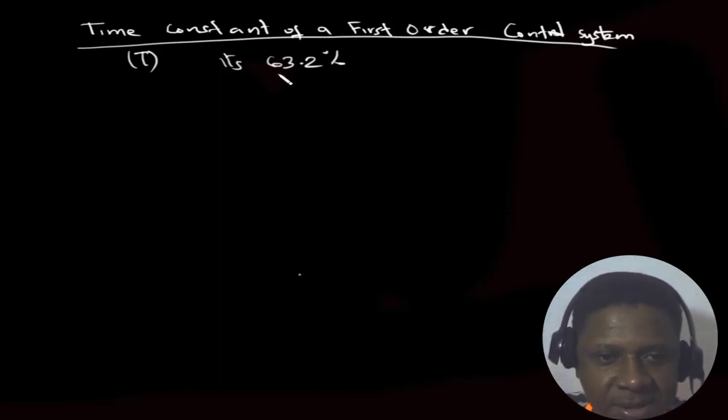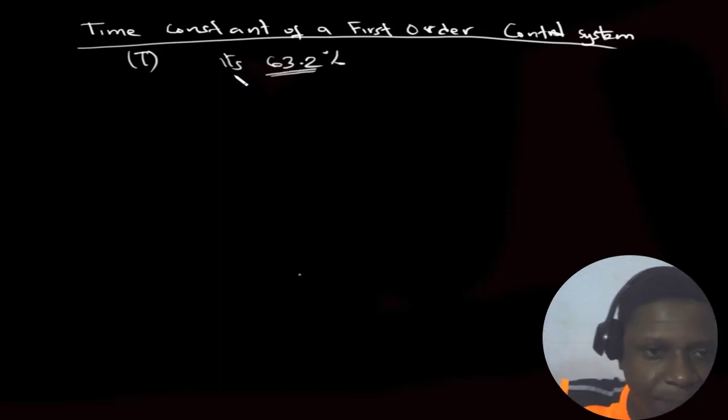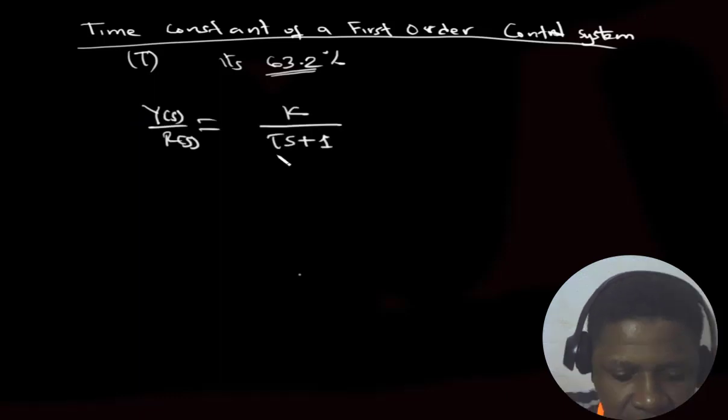It doesn't matter if the system is stable or not. Here we are just dealing with the final value. Let's say we have the following closed loop system. This is the tau we are talking about. It's a time measured in seconds.